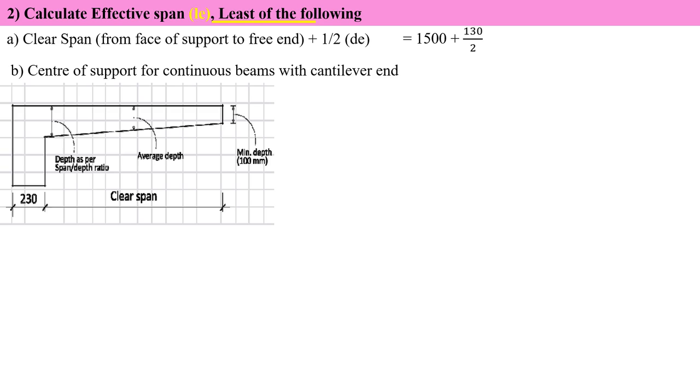So clear span is 1,500 plus effective depth which we already calculated, 130, divided by 2. So I am going to get a value of 1,615.